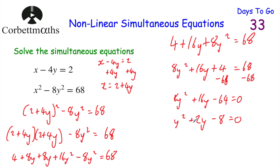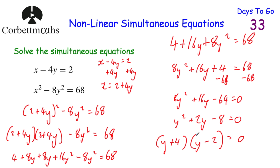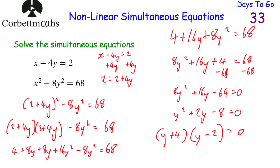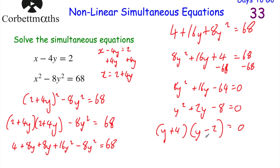Let's factorise y squared plus 2y minus 8 equals 0. We're looking for two numbers that multiply to minus 8 and add to 2 — plus 4 and minus 2, because 4 times minus 2 is minus 8, and minus 2 plus 4 is 2. So (y plus 4)(y minus 2) equals 0, giving y equals minus 4 or y equals 2.